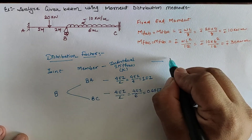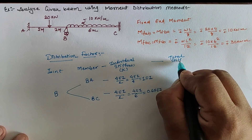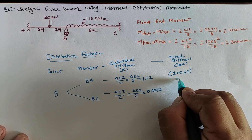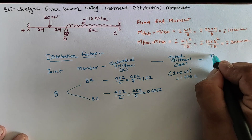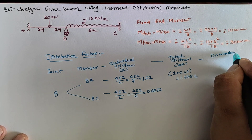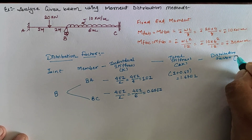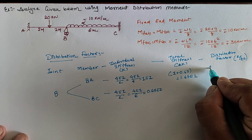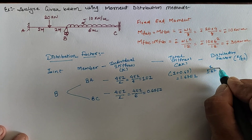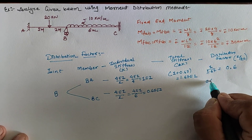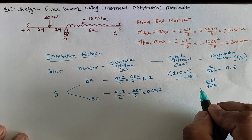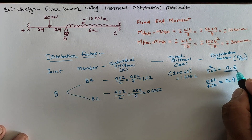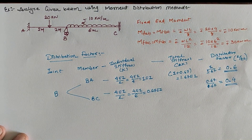The total stiffness sigma-K is 1 plus 0.67, which equals 1.67·EI. The distribution factor is calculated by taking the ratio of individual stiffness to total stiffness. For span BA it is 1 divided by 1.67, which equals 0.6. For span BC it is 0.67 divided by 1.67, which equals 0.4. So the distribution factors are 0.6 for BA and 0.4 for BC.